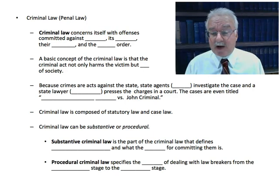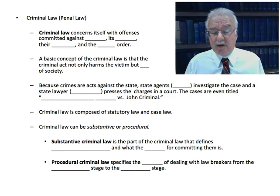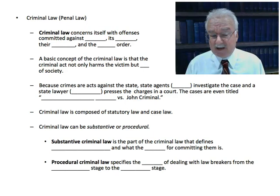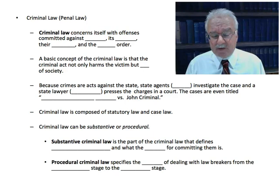Criminal law can be composed of statutory law and case law. Statutory laws are the written codified laws that say what is illegal, what the penalties are, and also mention defenses. Case law consists of the past rulings of judges interpreting statutory law. Criminal law can also be substantive or procedural. Substantive criminal law defines what acts are illegal and what the penalties are — rape, murder, arson, theft — describing precisely what you must do to be found guilty and specifying the penalty.